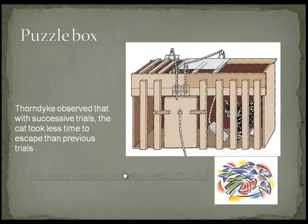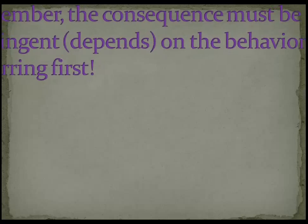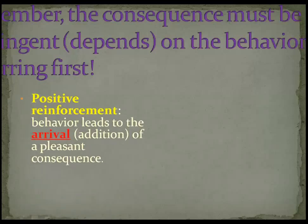So there you have it. Remember, the consequence of our behavior must be contingent — it must depend on the behavior occurring first. In order for it to be operant, the consequence has to depend on the behavior. If the behavior doesn't occur, the consequence doesn't happen.